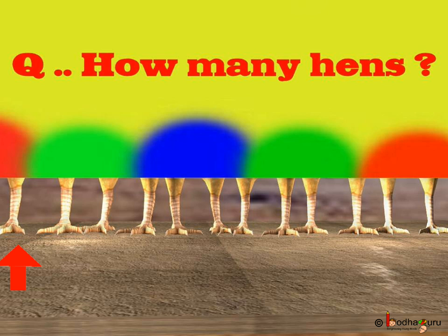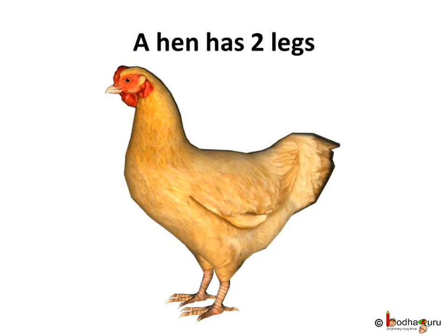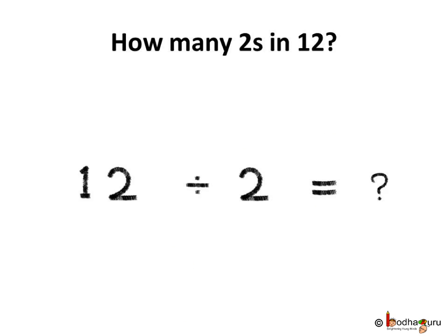1, 2, 3, 4, 5, 6, 7, 8, 9, 10, 11, 12. 12 legs are there. We already know a hen has 2 legs. Here, in order to find how many two-legged hens are there, we need to find how many groups of 2's are there in 12.